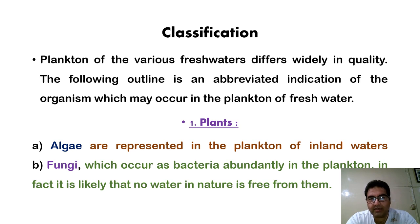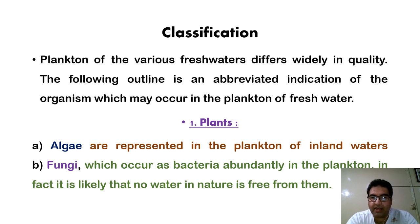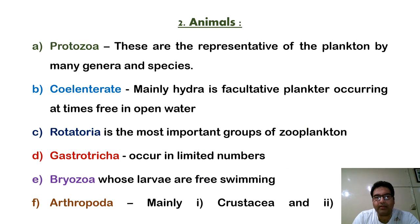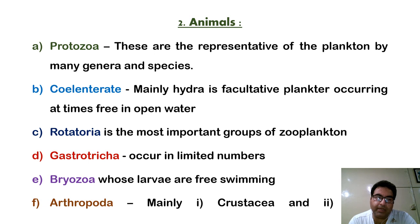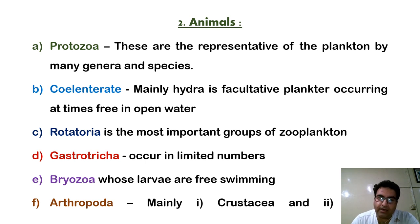From the plant source, we do have the algae which are represented in the plankton of the inland waters. Then we do have the fungi, which occur abundantly like bacteria as plankton present in the water. From the animal origin, we do have the different kinds of organisms: protozoa, coelentrates, rotatoria, gastrotricha, bryozoa, and arthropoda.